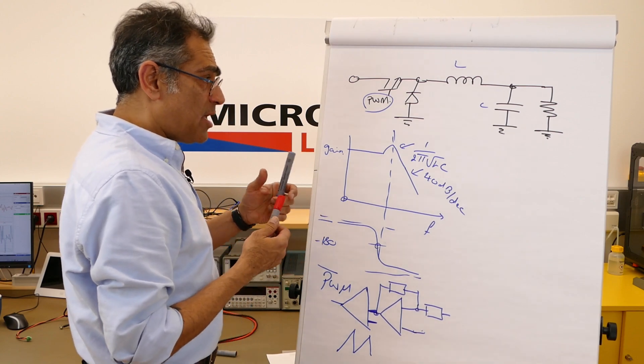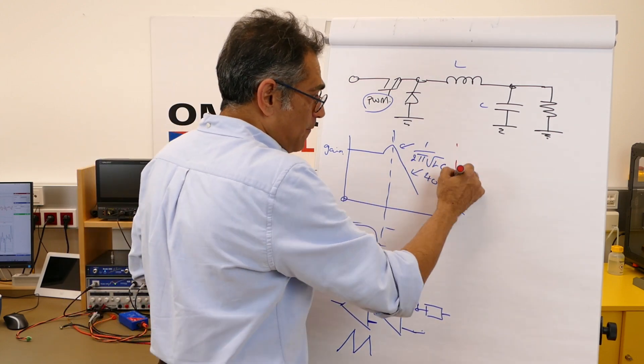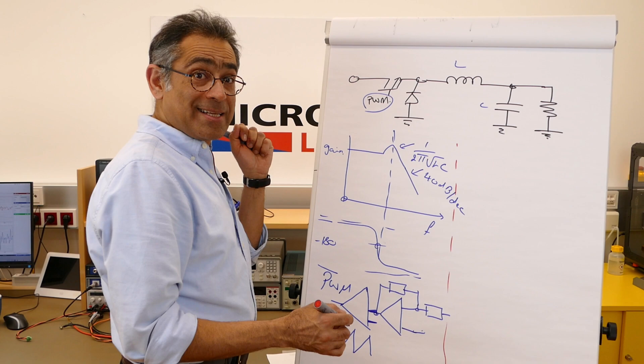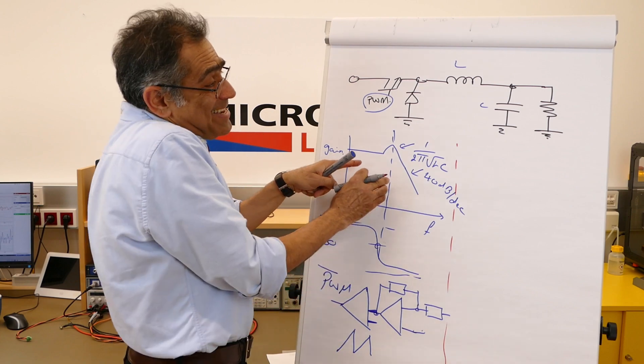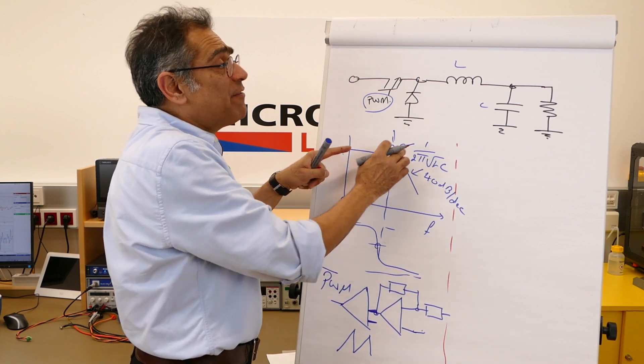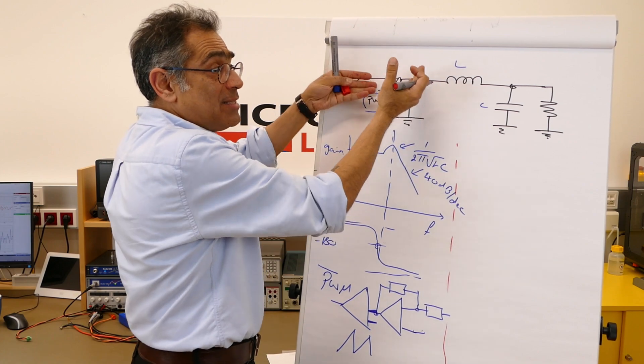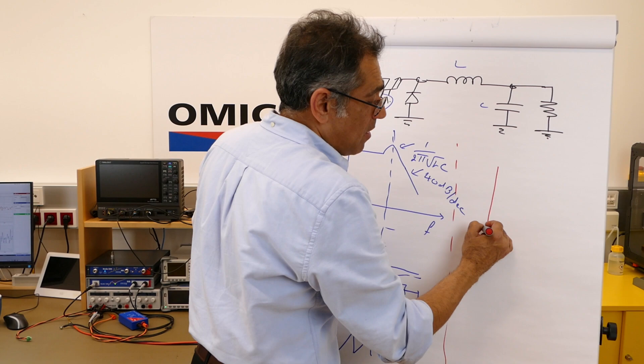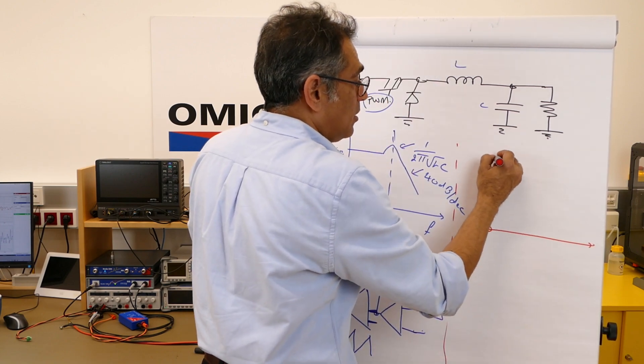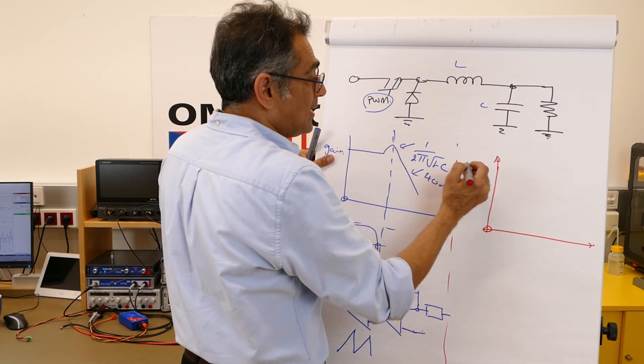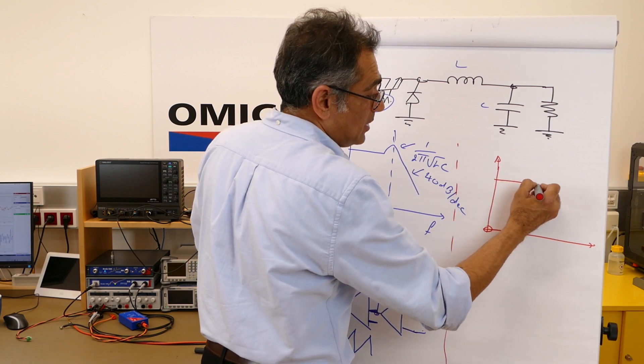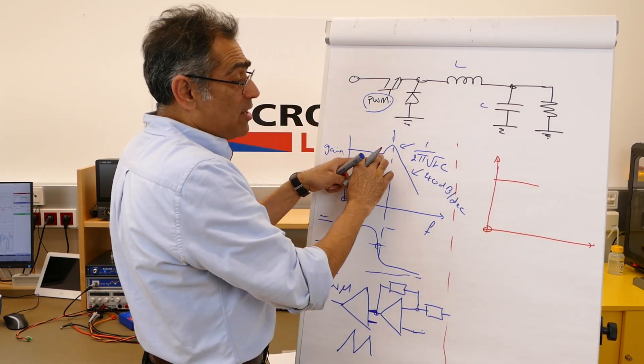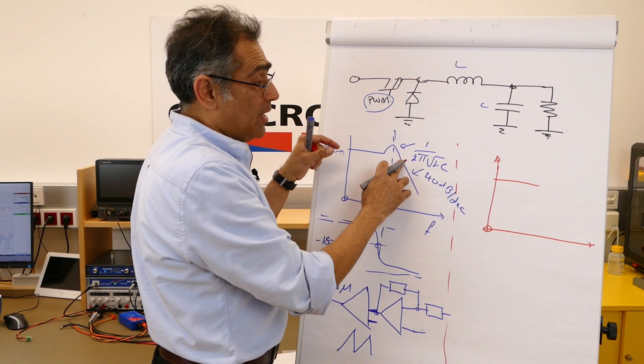Now let us look at current mode. You will see if we measure the plant, and we're going to do that in the lab in a minute, that it doesn't look like that even though we still have an LC. The topology stays exactly the same. But if I plot the plant of a current mode power supply, you will see that I still have some PWM gain.